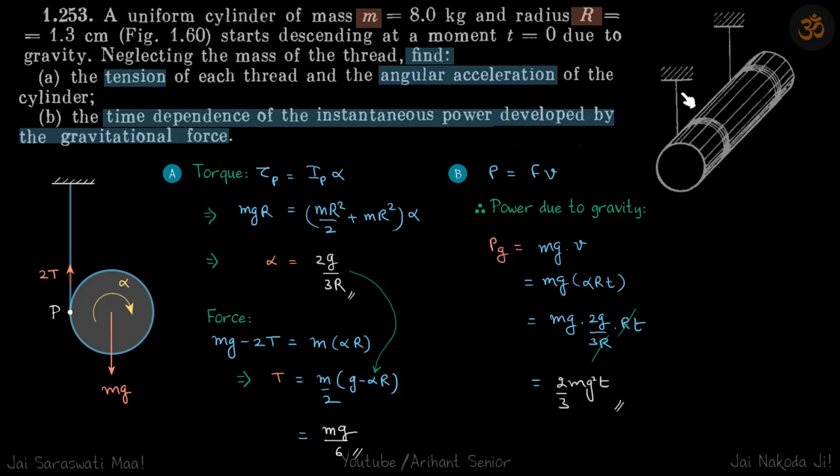We are given a cylinder that's hanging by two threads. We need to find the tension and power as a function of time. Let's write the force and torque equations: force is mg downwards and 2T